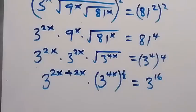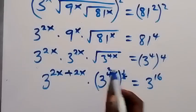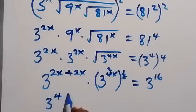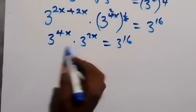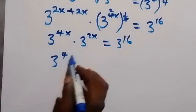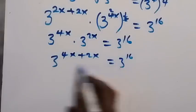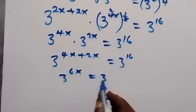Simplifying further: we have 3 raised to power 4x, then multiply by 3 raised to power 2x, then multiply by 3 raised to power 2x again, which equals 3 raised to power 16. Since they have the same base, we add the powers: 3 raised to power 4x plus 2x equals 3 raised to power 6x, equals 3 raised to power 16.